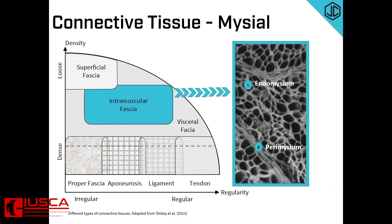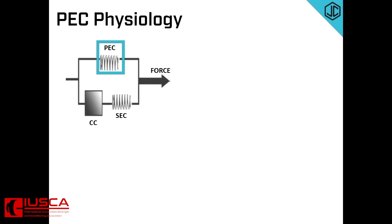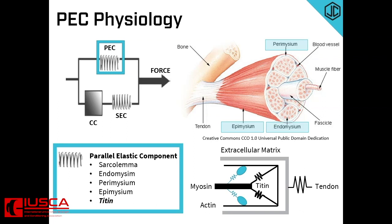The ultra-structure of some of these tissues can be seen in the figure on the right. The parallel elastic component, or PEC, as shown on the three-component model, consists of the sarcolemma and the mycel tissues: endomysium, perimysium and epimysium. The protein titin, which connects the myosin to the Z-discs in each sarcomere, has been classified as both a series and parallel elastic component. I will refer to it as a parallel elastic component. What is important, regardless of its classification, is that you understand its importance in terms of force production.